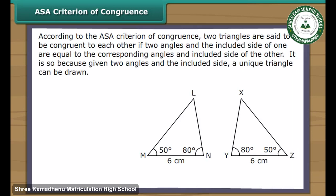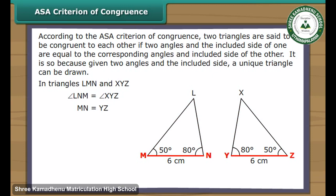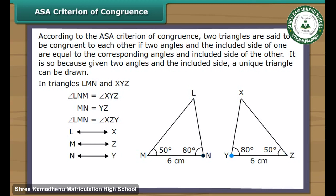ASA criterion of congruence: according to the ASA criterion, two triangles are said to be congruent to each other if two angles and the included side of one are equal to the corresponding angles and included side of the other. It is so because, given two angles and the included side, a unique triangle can be drawn. In triangles LMN and XYZ, angle LNM equals angle XYZ, side MN equals side YZ, and angle LMN equals angle XYZ. Vertex L corresponds to vertex X, vertex M to vertex Z, vertex N to vertex Y. Therefore, triangle LNM is congruent to triangle XYZ.